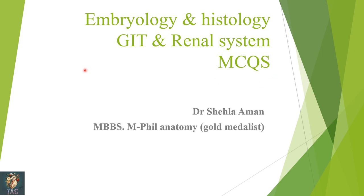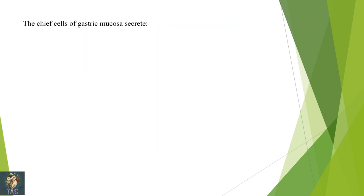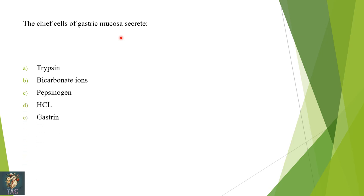The first MCQ is: the chief cells of the gastric mucosa secrete — trypsin, bicarbonate ions, pepsinogen, HCl, or gastrin? The correct option is that they secrete pepsinogen.